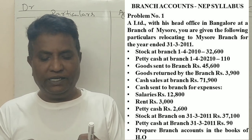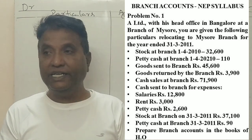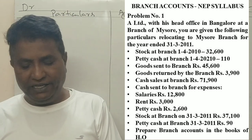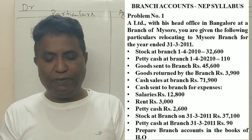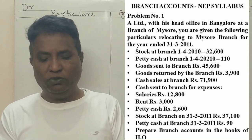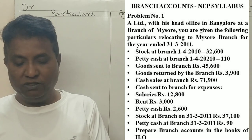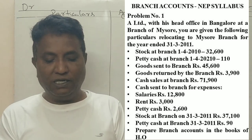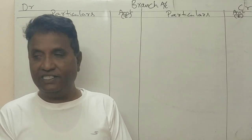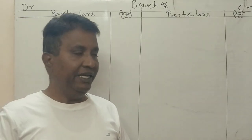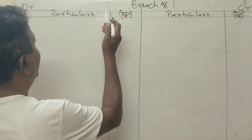Cash sent by branch for expenses: salary — 12,800 rupees; rent — 3,000 rupees; petty cash — 2,600 rupees. Stock at branch on 31st March 2011 — 3,700 rupees; petty cash at branch — 1,000 rupees. Prepare the branch account in the books of the head office.